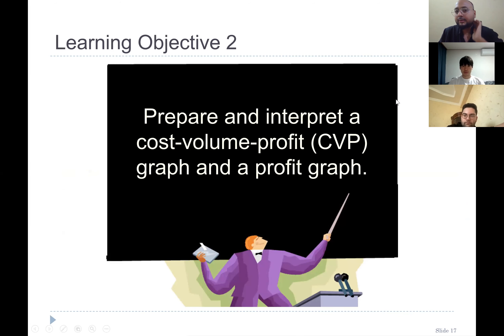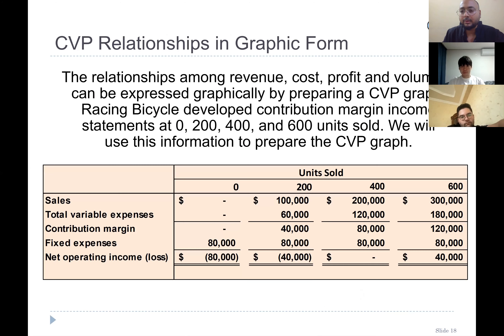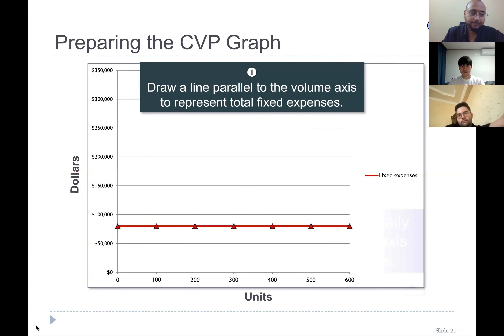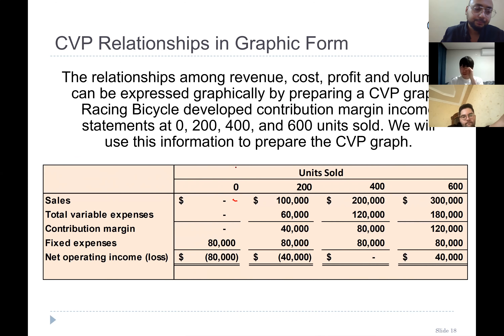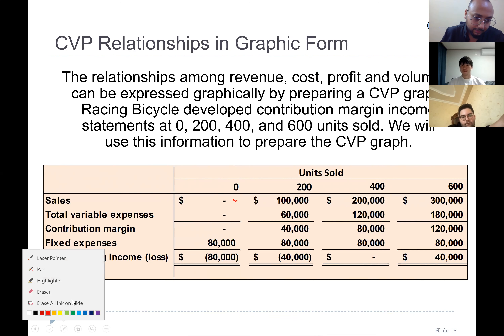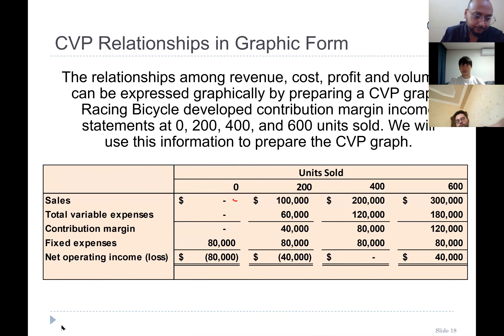Our second learning objective is to prepare and interpret a cost-volume-profit graph and profit graph. We have a situation here and we will plot the graph. On the x-axis, this is the number of units sold: zero, 200, 400, and 600.